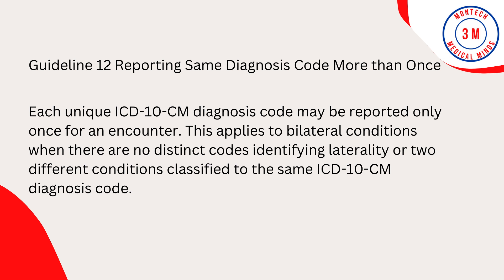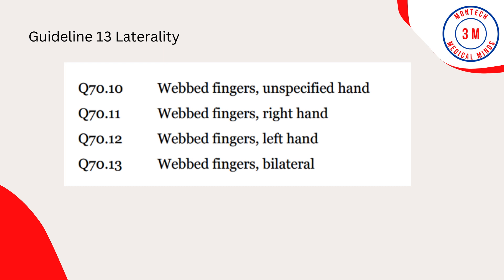Guideline 13: Laterality. Some ICD-10-CM codes indicate laterality, specifying whether the condition occurs on the left, right, or is bilateral. If no bilateral code is provided and the condition is bilateral, assign separate codes for both the left and right side. If the side is not identified in the medical record, assign the code for the unspecified side.